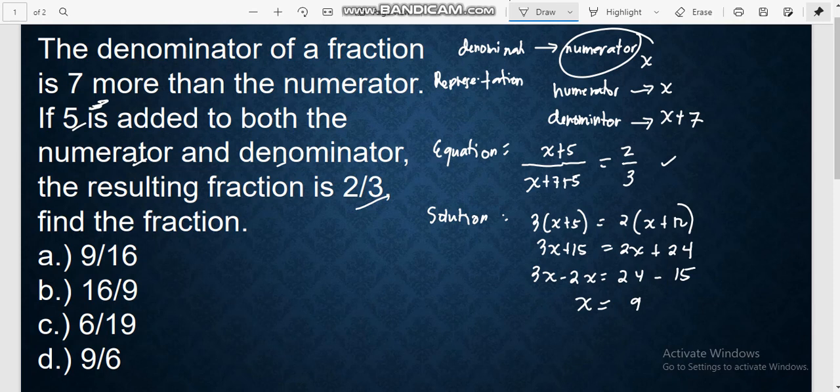So where x is 9, this is our numerator. And our denominator is x plus 7, which is 9 plus 7. You will have 16. Thus, our conclusion, the fraction is 9 over 16.